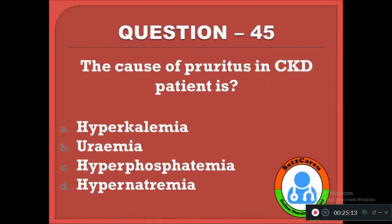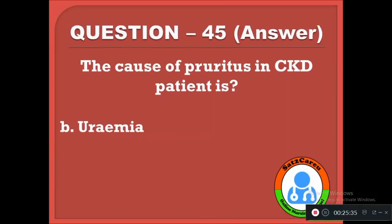Question 45: The cause of pruritus in chronic kidney disease is due to — option A: hyperkalemia, B: uremia, C: hyperphosphatemia, D: hypernatremia. The correct answer is B, pruritus in chronic kidney disease is due to excessive urea in the blood, that is uremia.